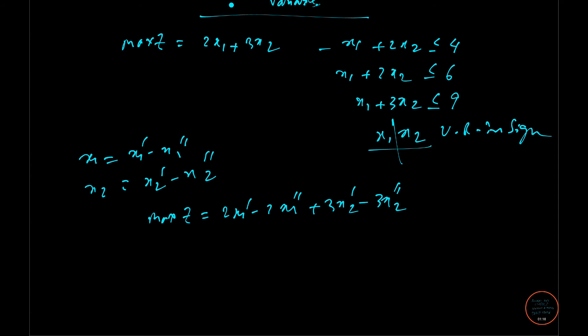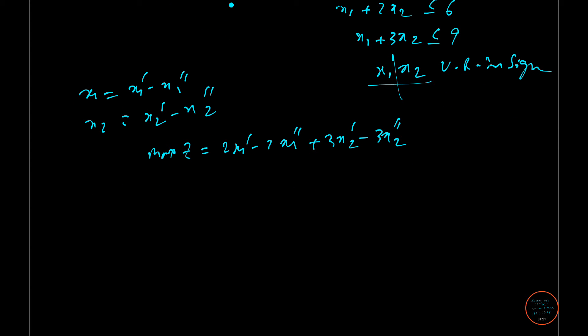And here it will be minimization. Maximum will obviously become minimization of z dash, and the two equations have coefficients 4, 6, 9. So 4w1 plus 6w2 plus 9w3 subject to minus w1 plus w2 plus w3.